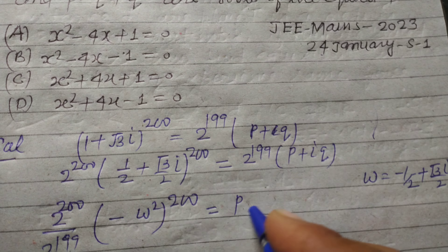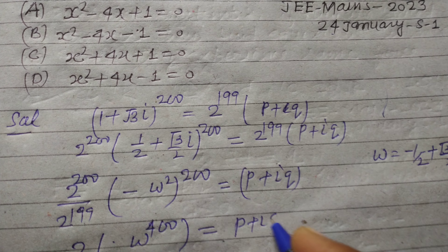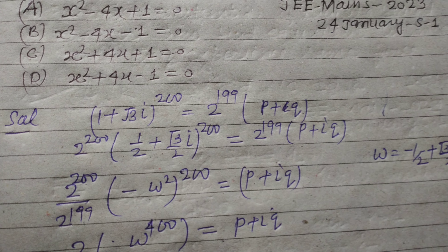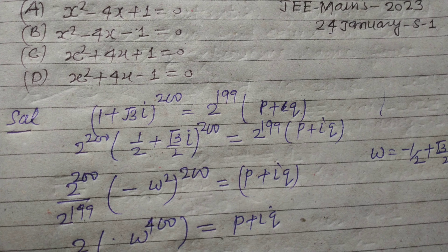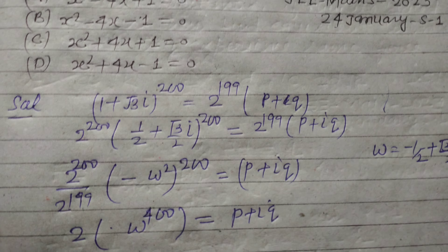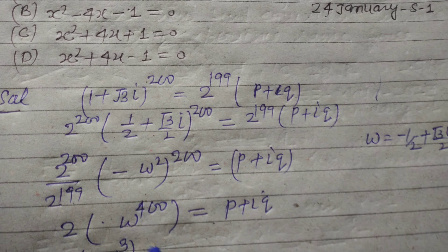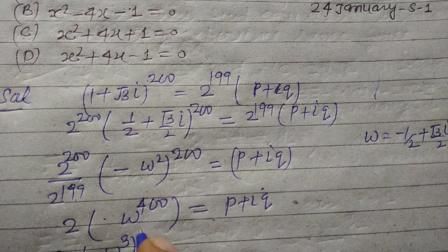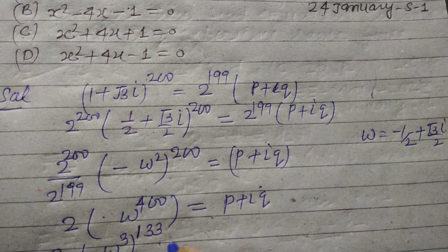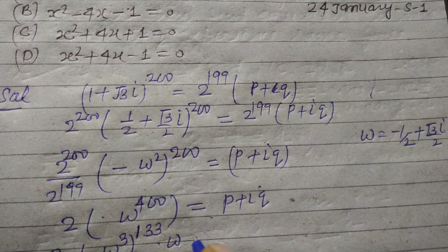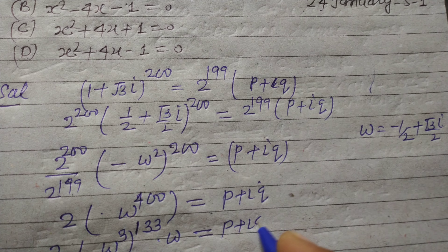Now we simplify: 2 times ω² gives us ω^400. We know 400 = 3×133 + 1, so ω^400 = ω^1 = ω. Therefore 2·ω equals p + i·q.